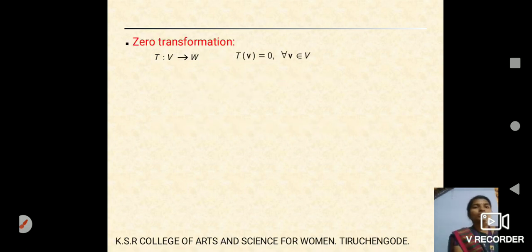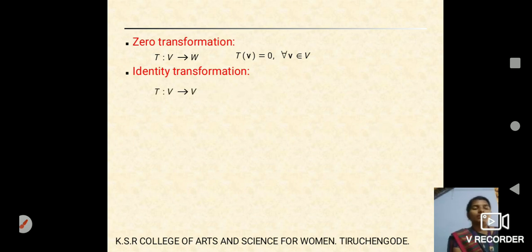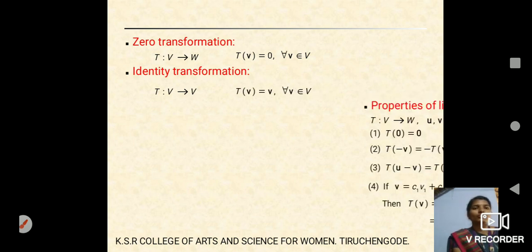Zero transformation: T(v) = 0 for all v belonging to vector space V. Identity transformation: T mapping from V to vector space V, defined by T(v) = v, is said to be the identity transformation.